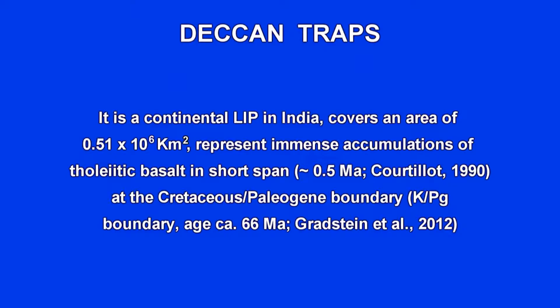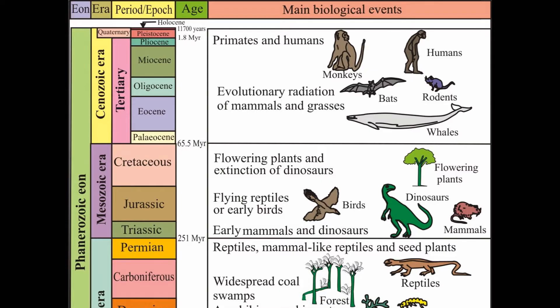Another important thing about Deccan volcanism is that the huge activity took place in a very short time span. In geological terms, the time span is 0.5 million years — that is a very short time span. No other large igneous province in the world has occurred in such a small time period. A large quantity of lava erupted in a short time span, showing how violent this eruption was in India. Secondly, as said earlier, it occurred at the Cretaceous-Tertiary boundary.